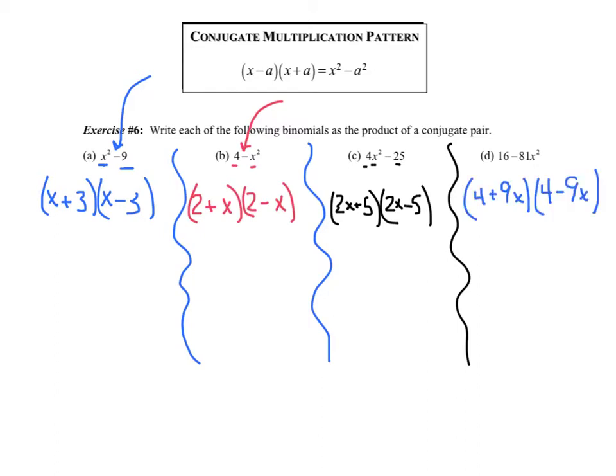I've got 4 plus 9x and 4 minus 9x, and I hope you would agree 16 is perfect because 4 times 4, 81, 9, and 9, and there's an x there.